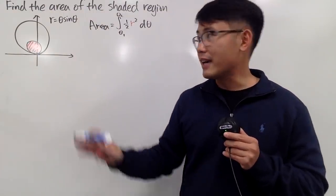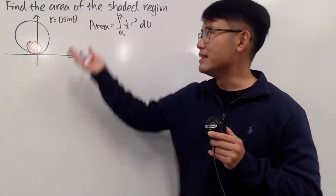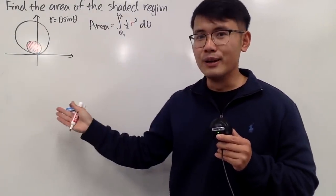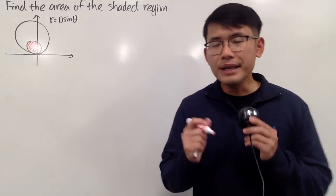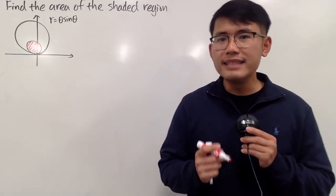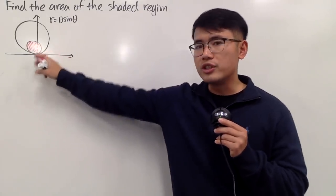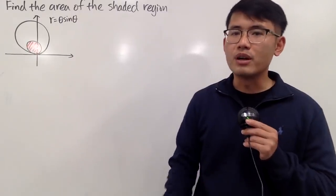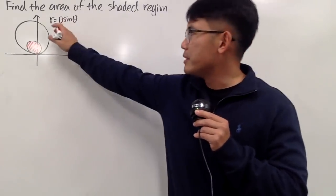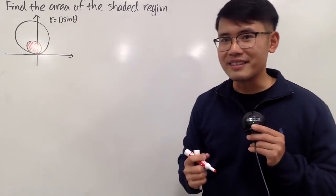It's not because I cannot draw — it's because this is not a circle. That's the reality. In this video, I'll show you guys how to find the area of this shaded region, and we are talking about a polar curve, namely r is equal to theta times sine theta.